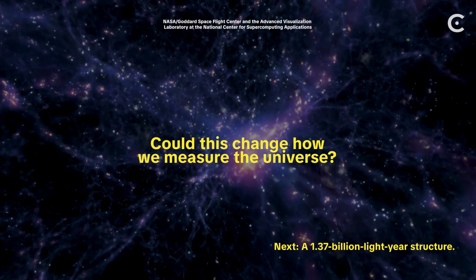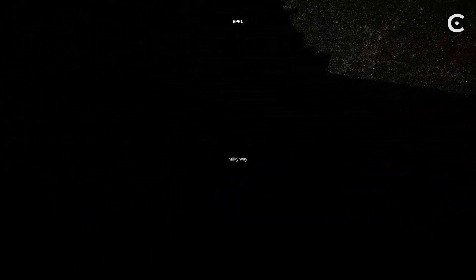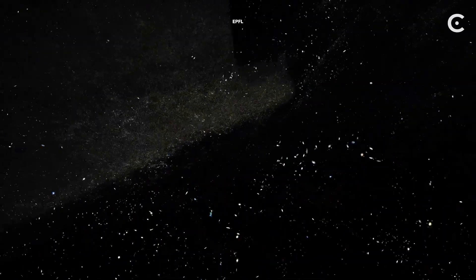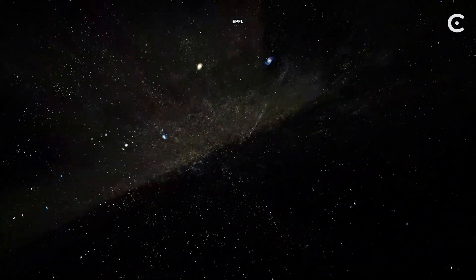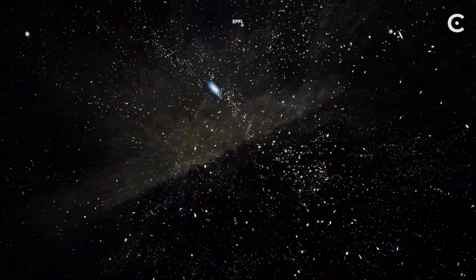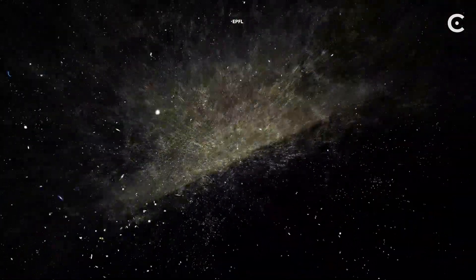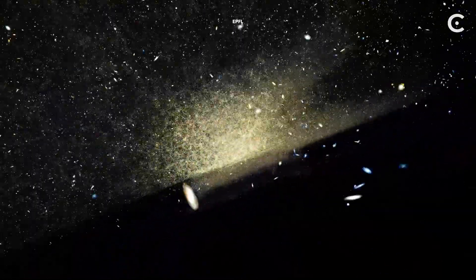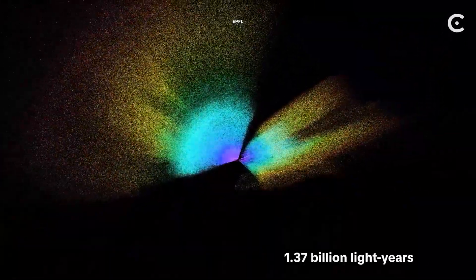But we're not done. The next one? It was the first structure to make astronomers say, Wait! That shouldn't exist. Back in 2003, astronomers working with the Sloan Digital Sky Survey found something that made them do a double-take. A wall of galaxies. Not a cluster. Not a supercluster. A wall stretching 1.37 billion light years across the cosmos.